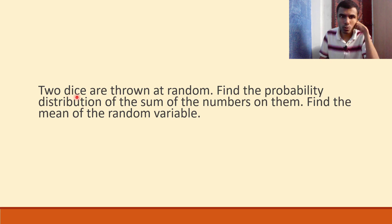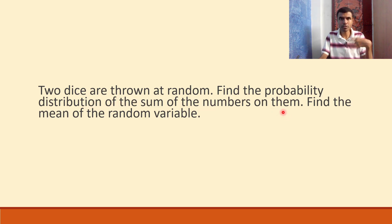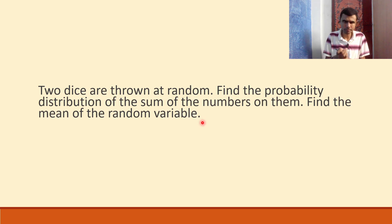Here two dice are thrown at random. We have to find out the probability distribution table for the sum of the numbers on them, and we also have to find the mean of the random variable. This is what we have to do.